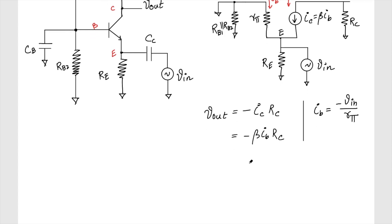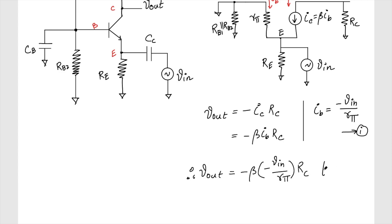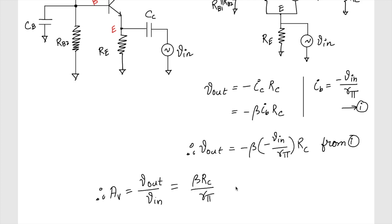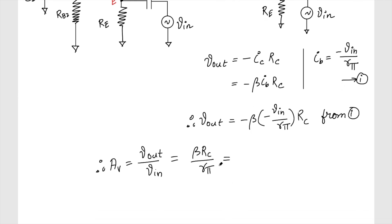Substituting IB into the Vout expression: Vout equals minus beta times (minus Vin by Rπ) times RC. Therefore the gain, Vout by Vin, equals beta times RC by Rπ.